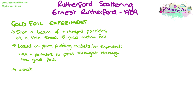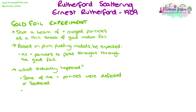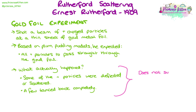What actually happened was that some of those alpha particles were deflected or scattered in different directions — they didn't pass straight through. A few of the particles rebounded completely, bouncing back towards the emitter of the alpha particles. These results were highly significant because neither outcome supports the plum pudding model, leaving Rutherford needing to update the model to fit the experimental outcomes. This method of using experimental data to update models is still used now — it's how all scientific models are developed and improved over time.